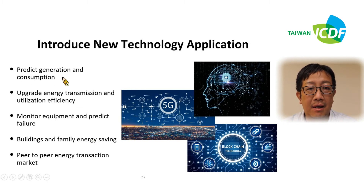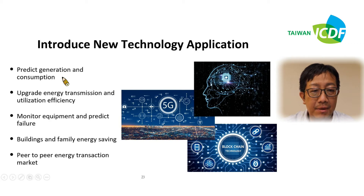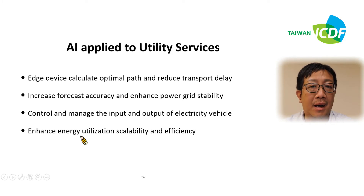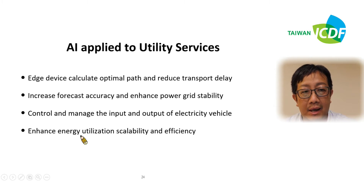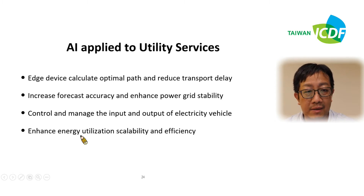New technology applications include prediction of generation and consumption, upgrading energy transmission and utilization efficiency, monitoring equipment and predicting failures, building and family energy saving, and peer-to-peer energy transaction markets. AI is applied to utility services, especially at the edge device level to calculate the optimal path to reduce transmission delay, increase forecast accuracy, enhance power grid stability, control and manage input and output from electric vehicles, and enhance energy utilization scalability and efficiency.